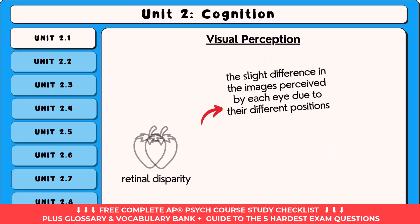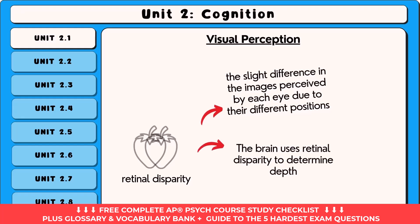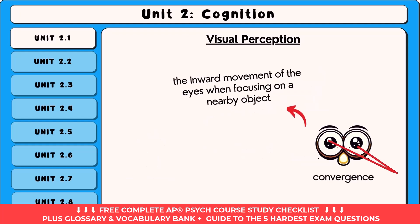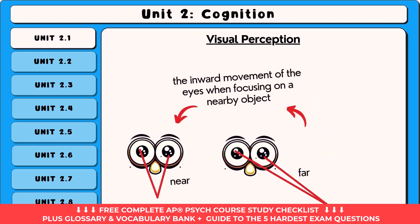Retinal disparity is the slight difference in the images perceived by each eye due to their different positions, which the brain uses to determine depth. Convergence is the inward movement of the eyes when focusing on a nearby object, with greater convergence indicating closer distance.